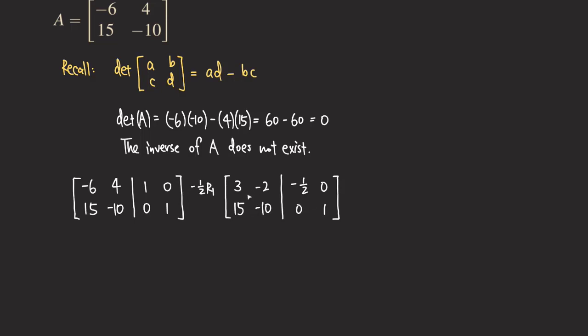You probably can tell that we are not going to be able to turn this into the identity matrix because when we do one more row operation, we are going to get zero for those two entries right here. Why is that? It's really because this second row right here, not including the right side, those two entries are really just multiples of those two entries right here, respectively.